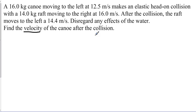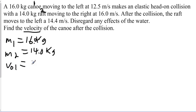And so when we work this out, we can say our canoe is going to be our first mass, and the raft will be our second mass. And so our m1 is equal to 16 kilograms. Our m2 is equal to 14 kilograms. Our v01 is equal to 12.5 meters per second. Now here's where we have to be careful. This is going to the left and one is moving to the right.